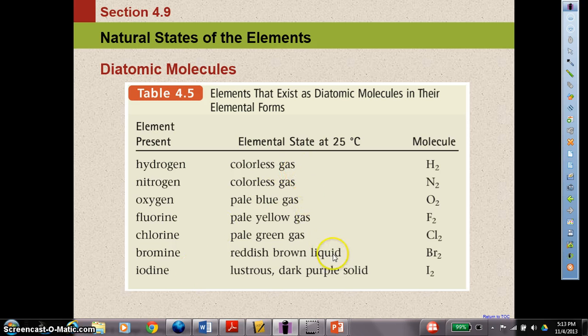This is a table from your book. It just shows you the elements that exist as diatomics. This tells you what they would look like at 25 degrees Celsius, which is standard temperature, and how you would write them as a diatomic molecule. So remember that you need to memorize these and to know these for the test. That's all there is for this lecture. Thank you.